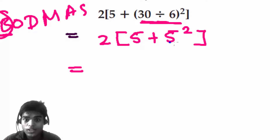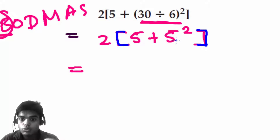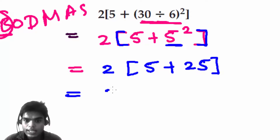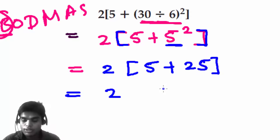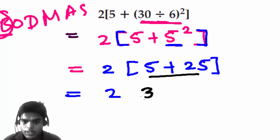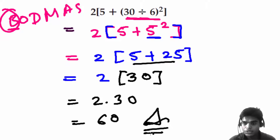We still have the bigger bracket left, but always solve the innermost part first. So it's two in brackets, five plus five-squared, which is 25. We add five and 25 to get 30 inside the bracket, which means two times 30 equals 60. That's our answer.